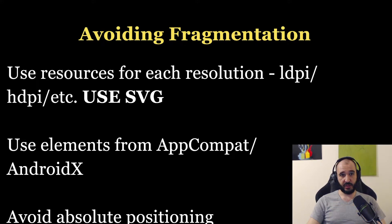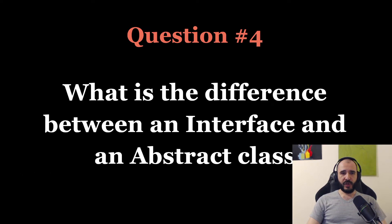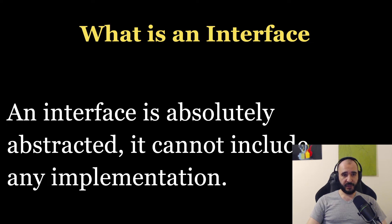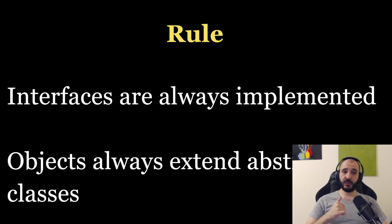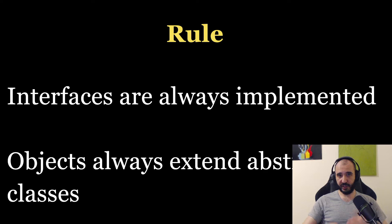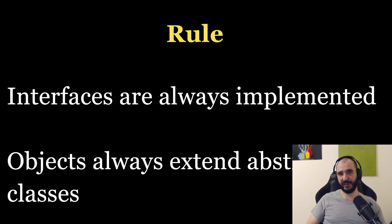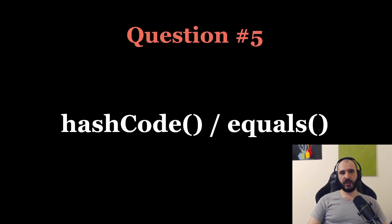What's the difference between an interface and an abstract class? An interface is completely abstract — it cannot include any implementation. An abstract class can define some behavior and internal structure for an object. Interfaces are always implemented; objects always extend from abstract classes. You always implement an interface — you don't extend one, because there is no functionality to inherit in an interface.